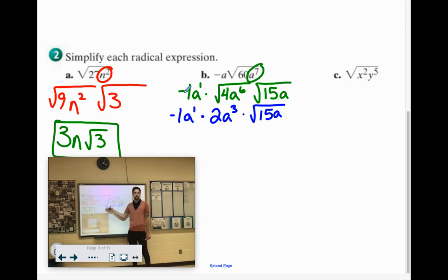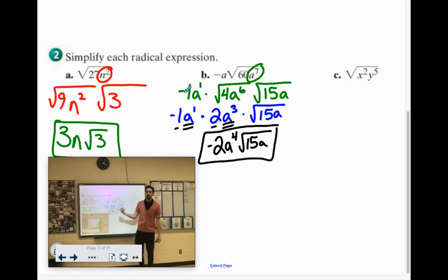Now when you're multiplying. We did this in chapter 8 when we were doing exponent properties. -1 times 2 is -2. a¹ times a³ would be a⁴. That's all we can do out of that step. And then we have our √15a.